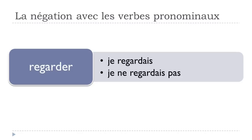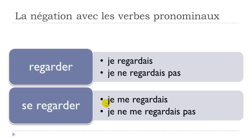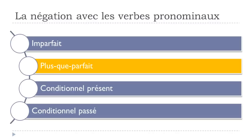For L'IMPARFAIT, REGARDER goes like JE REGARDAIS, and the negative form is JE NE REGARDAIS PAS. For SE REGARDER, quite simple with only one verb: JE ME REGARDAIS. Negative form: JE NE ME REGARDAIS PAS. Remember, NE first, then ME, then PAS at the end.